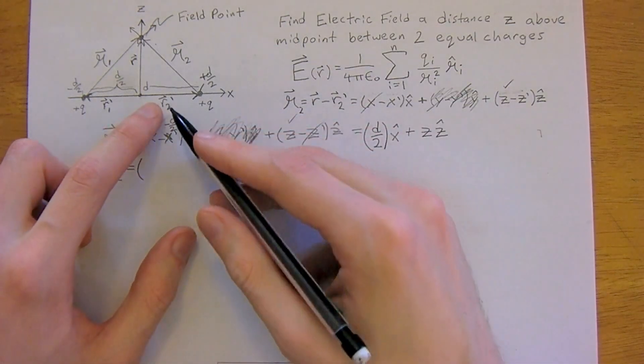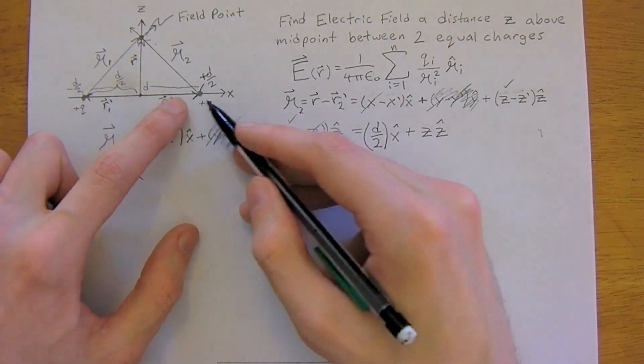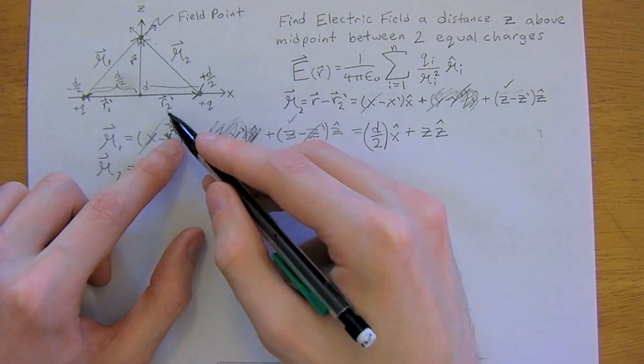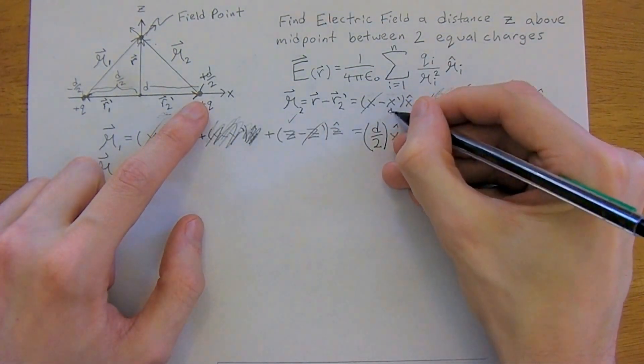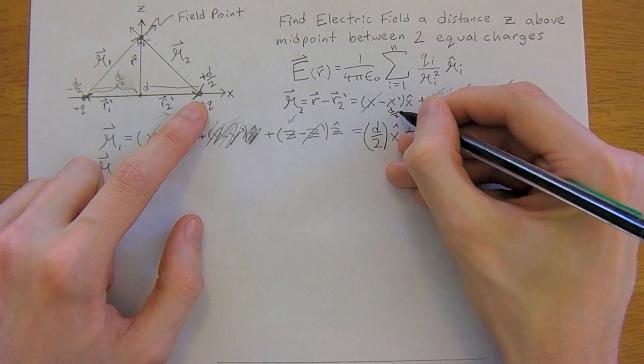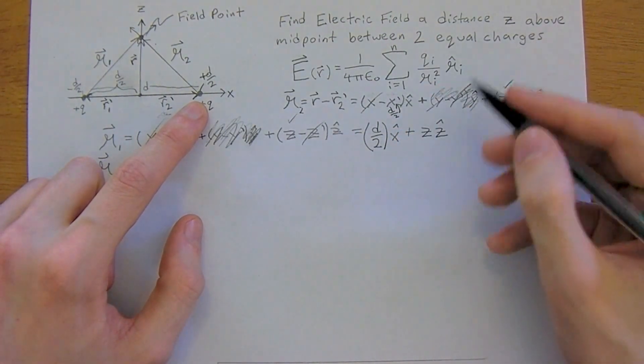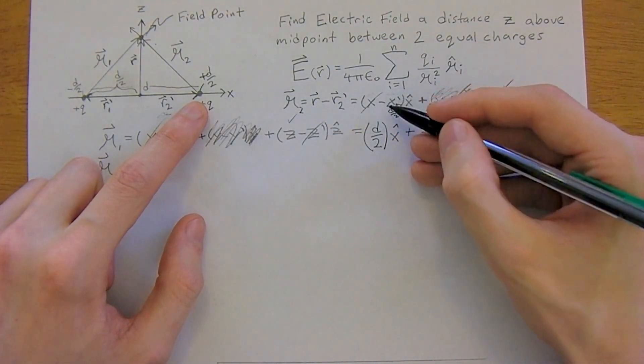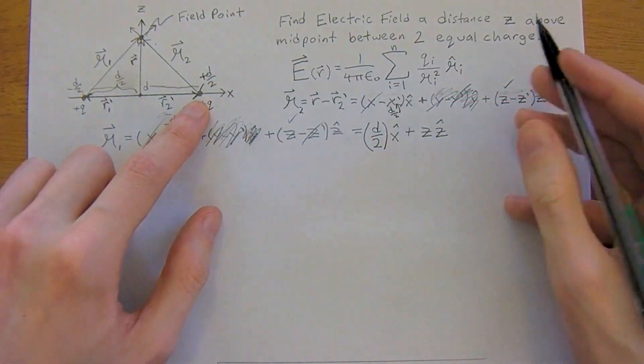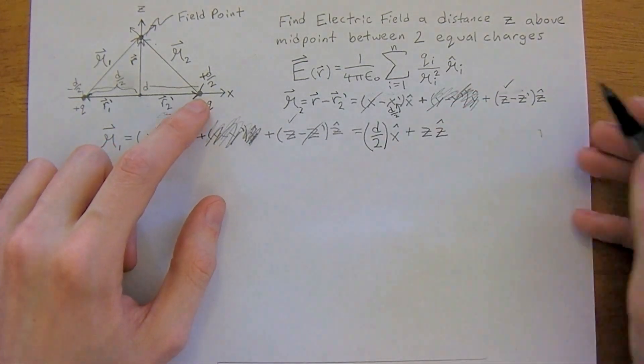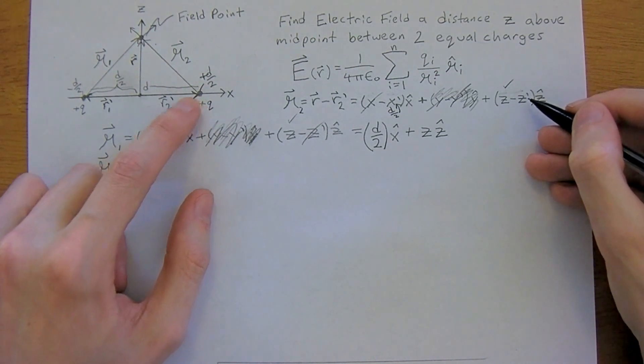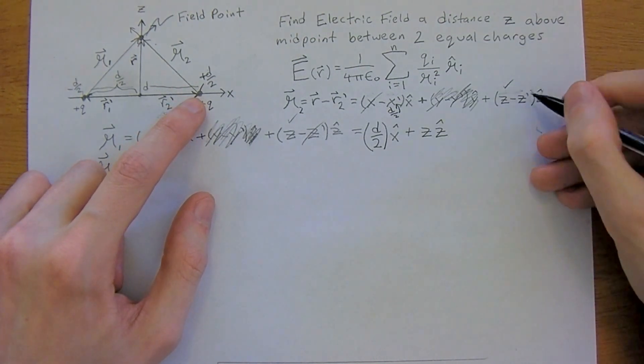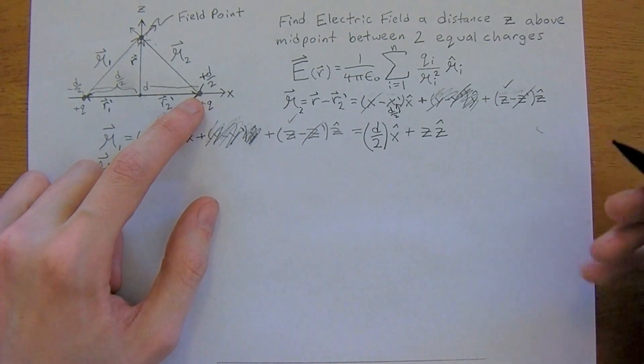And r prime 2. Do we have an x coordinate? We do. It is at, so we're looking for this right now. It is at positive d over 2. So d over 2 is positive. Plug it in for that. Which will actually give us a negative, but just got to keep track of the signs. Then do we have a z prime? And we don't, because we are at z equals 0. So cross that off.